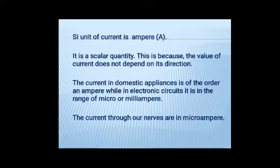Even though electric current has both magnitude and direction, it is a scalar quantity. This is because the value of electric current does not depend on its direction. That is, the current in a wire remains unchanged if it is bent, tied with a knot. So, it is a scalar quantity.